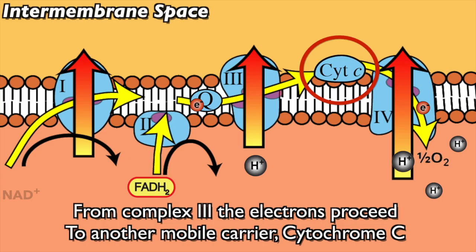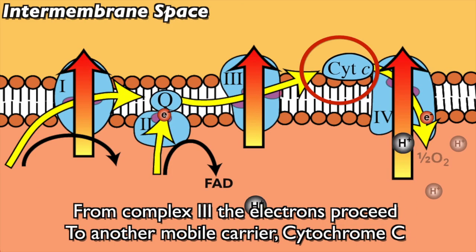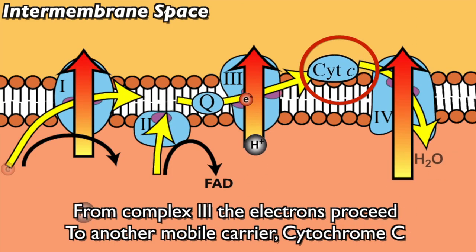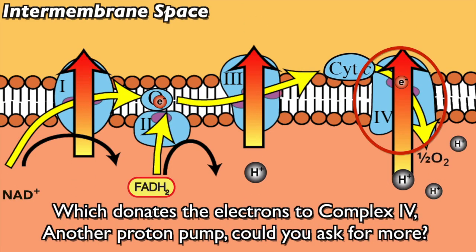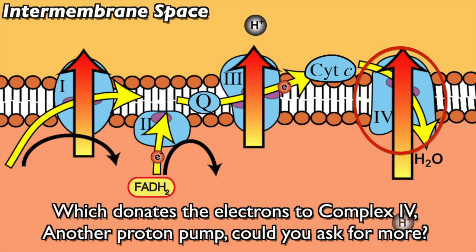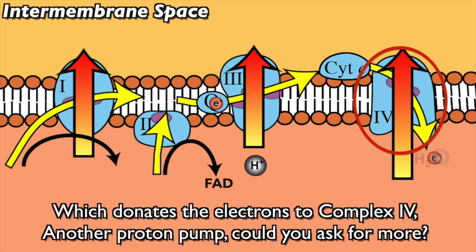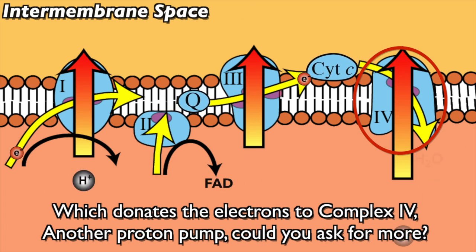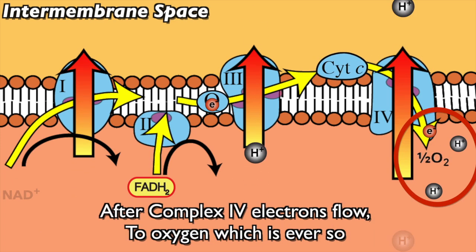From complex three, the electrons proceed to another mobile carrier, cytochrome C, which donates the electrons to complex four — another proton pump.